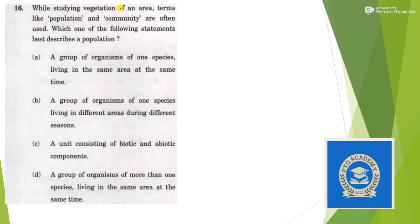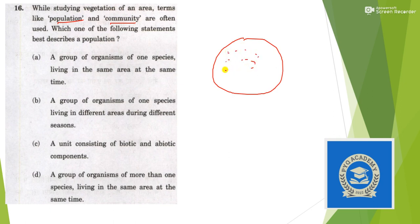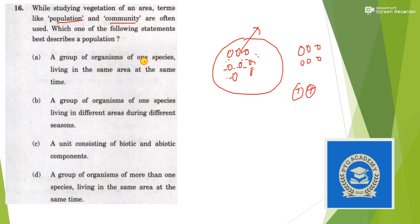Next: while studying vegetation of an area, terms like population and community are often used. Which one of the following statements best describes a population? For population, there is one area and a large number of species — all of the same kind. If humans are there, all should be human; if elephants, all should be elephants. The species should be the same — one species living in the same area at the same time. This is the correct statement, so the answer is A.